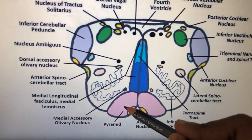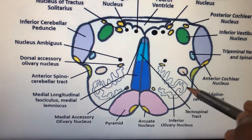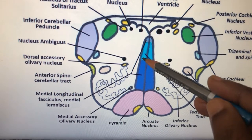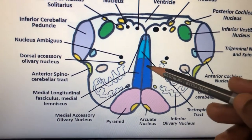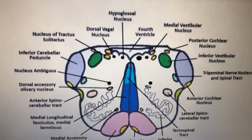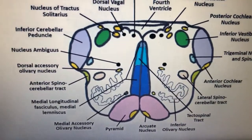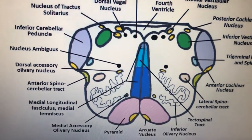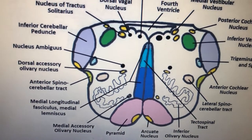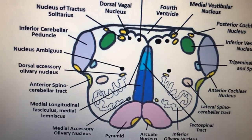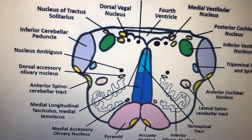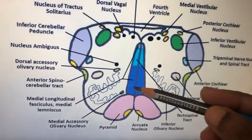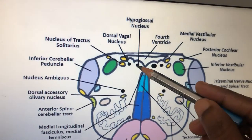The pyramid contains the corticospinal tract. The olive is formed by the inferior olivary nucleus. The medial longitudinal fasciculus interconnects the 3rd, 4th, and 6th nerves for eyeball movement, the 8th nerve for hearing, and the 11th nerve for neck turning — all coordinated when you respond to a sound. The internal arcuate fibers decussate and form the medial lemniscus, which carries conscious proprioception from the posterior column.